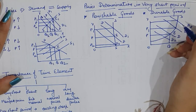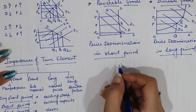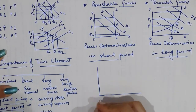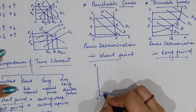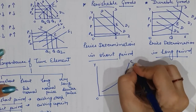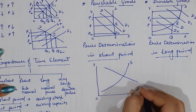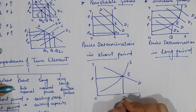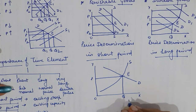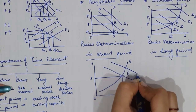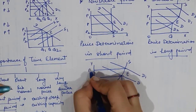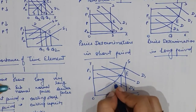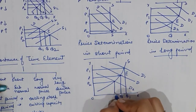Next comes price determination in the short period, and such a price is known as subnormal price. When determining the subnormal price, we use a supply curve where supply can be increased depending on existing capacity. If demand is high, price also gets high; if demand is less, price will fall to OP2 level.